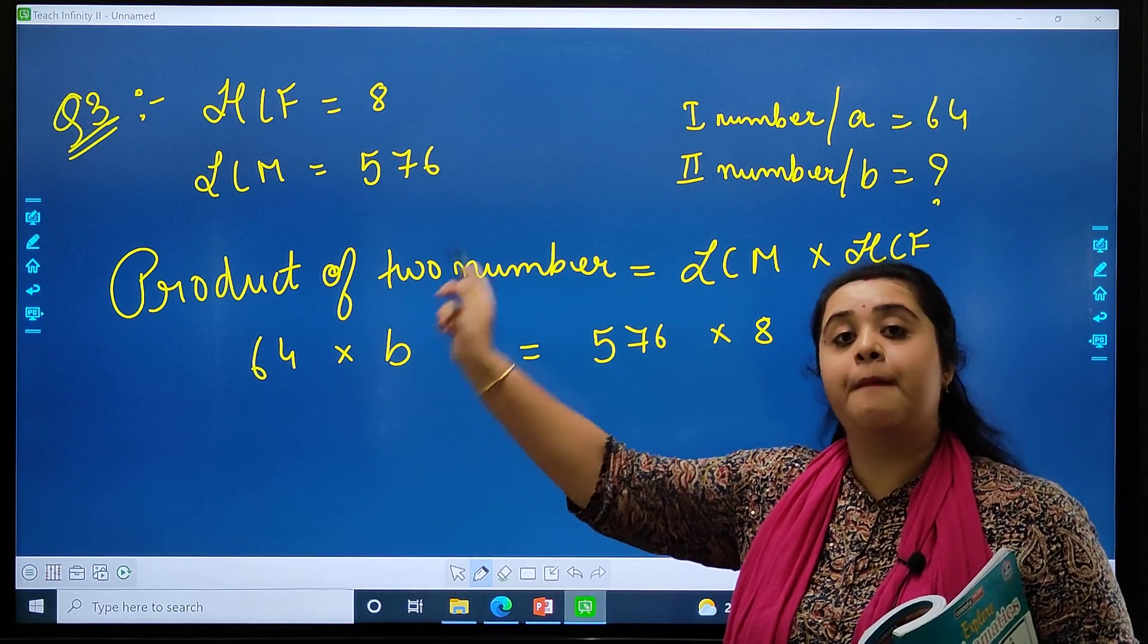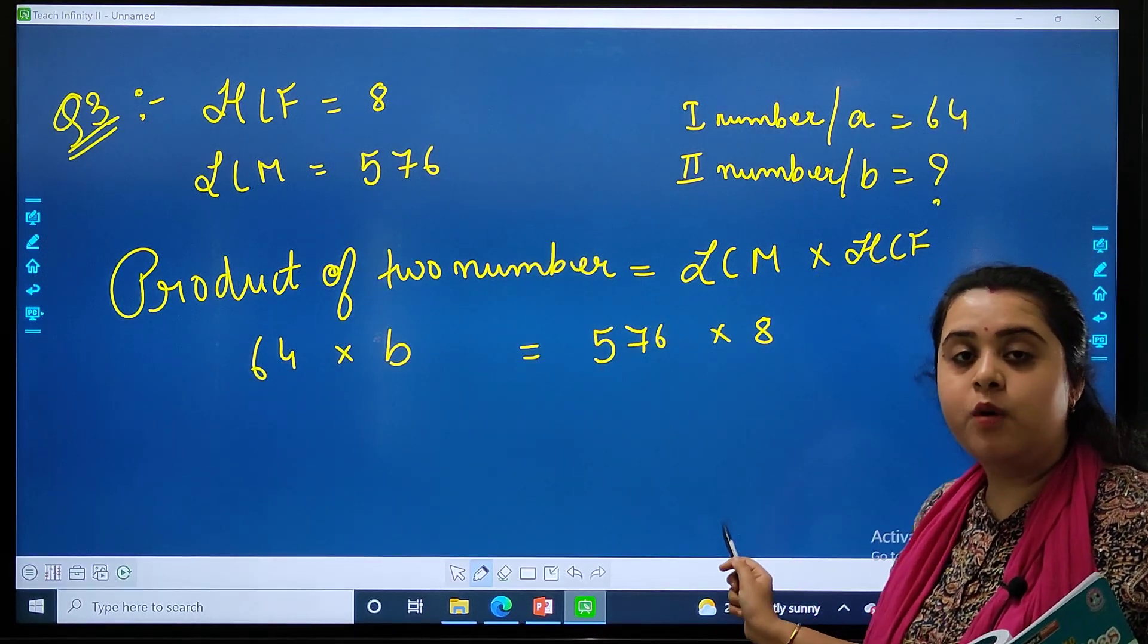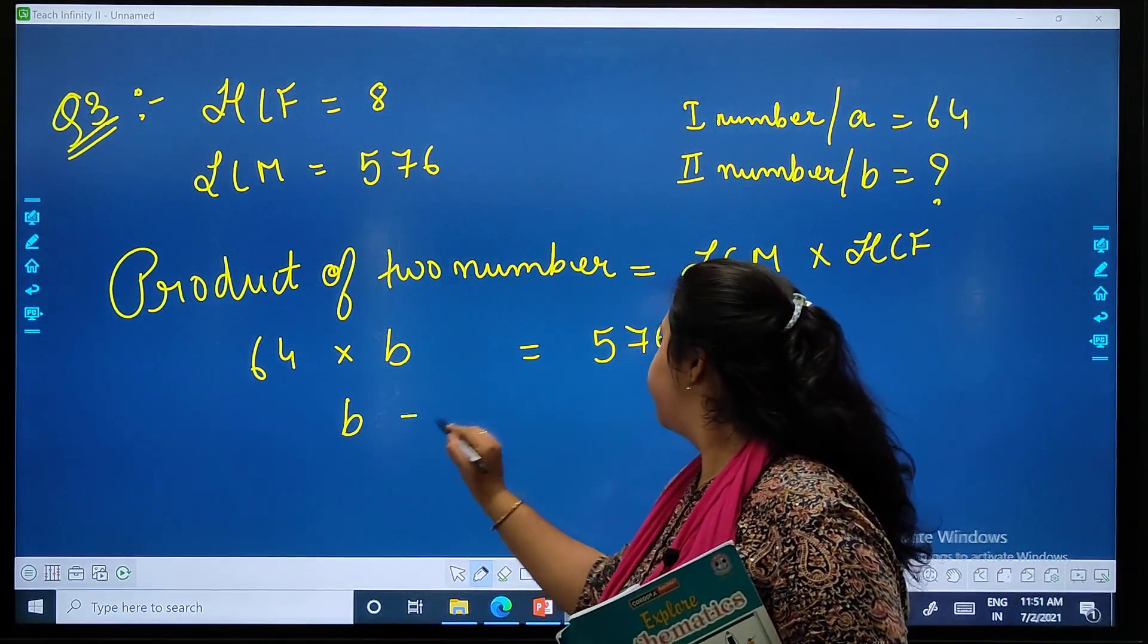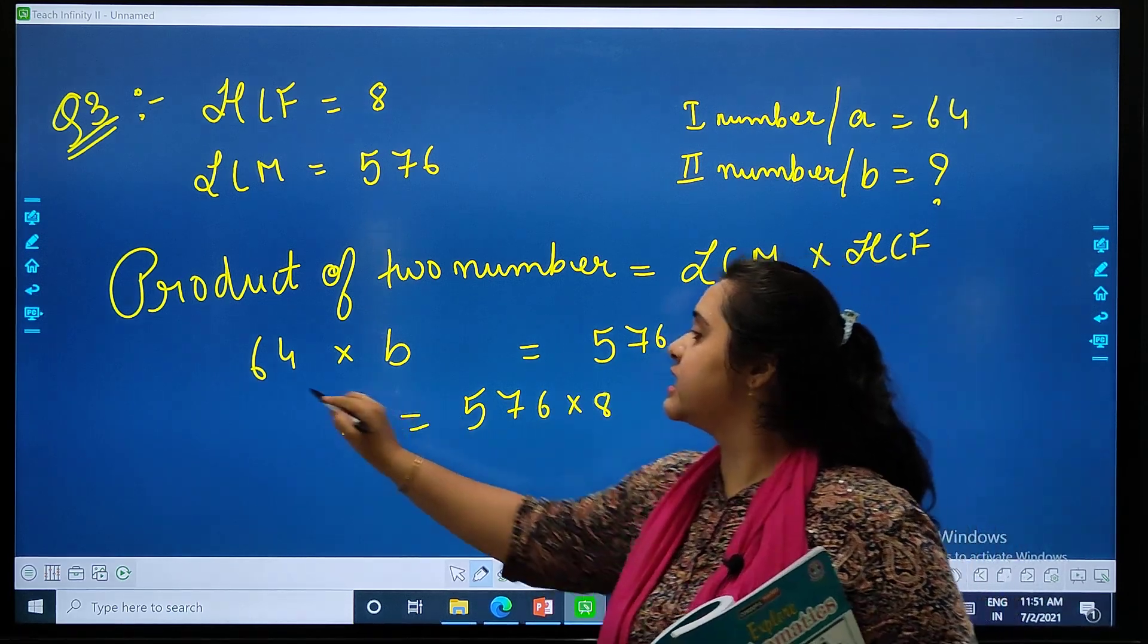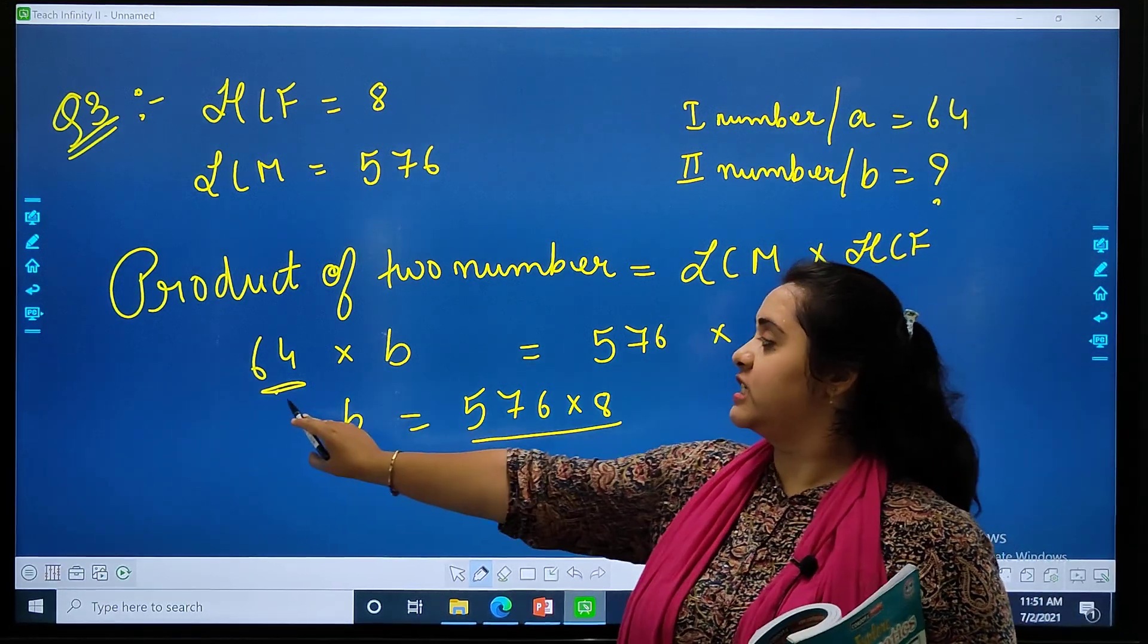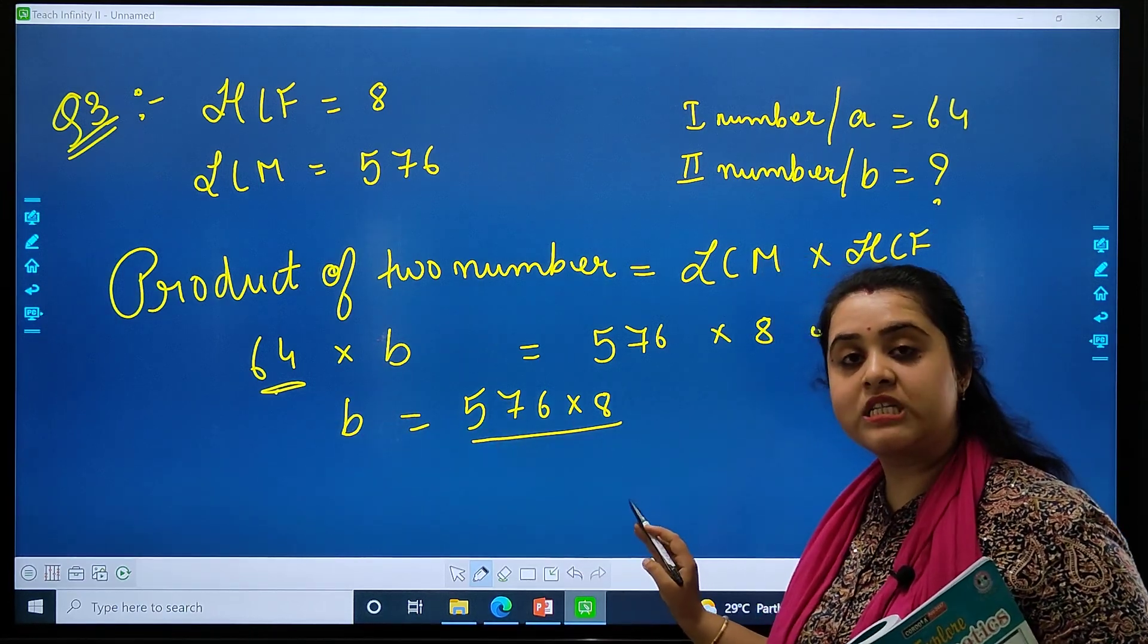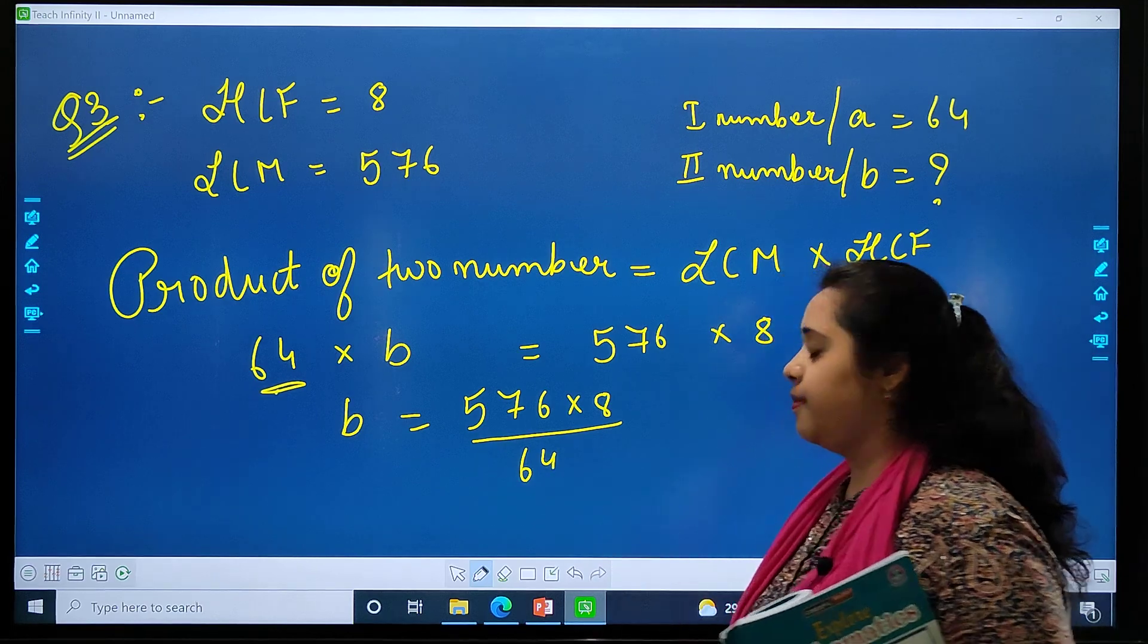Same way, 576 into 8 will remain as it is. This 64 will be going to this side. So as you can see, 64 is in multiplication. When it goes to the other side, it will be in division. Done, easy.